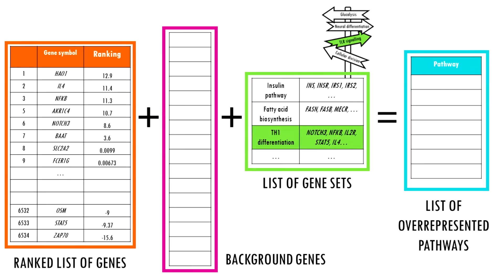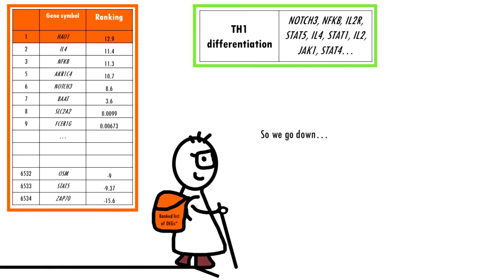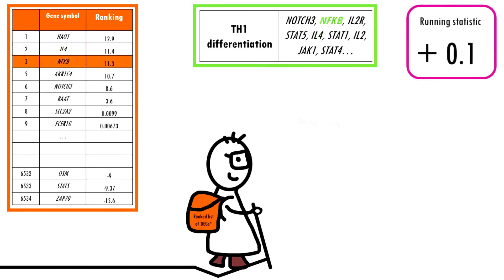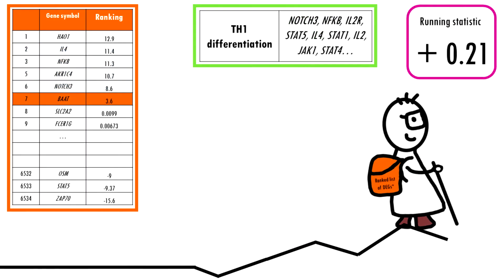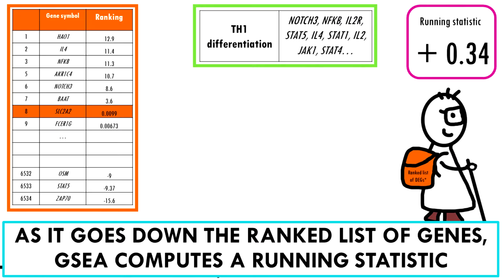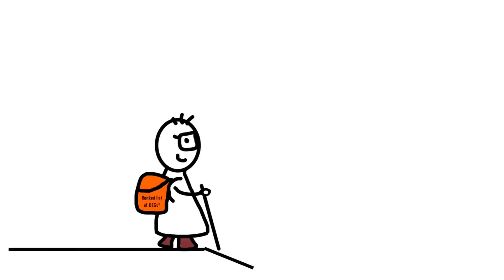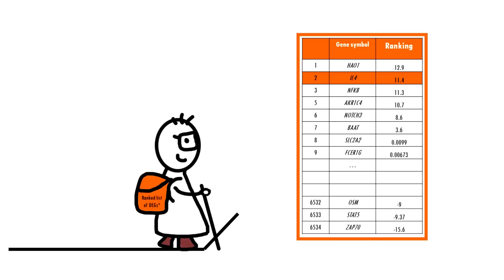For each gene set, you go through your list of ranked genes. If the gene is not part of the gene set you go down the hill; if the gene is part of the gene set you go up. This is how GSEA calculates the running statistic as it goes down your ranked list — think of it as tracking your altitude while you hike. This running statistic increases when a gene is in the gene set and decreases when it is not. How much you go up or down depends on your differential gene expression analysis results, which is also why the ranked list is very important, where genes are ordered by, for example, fold change.